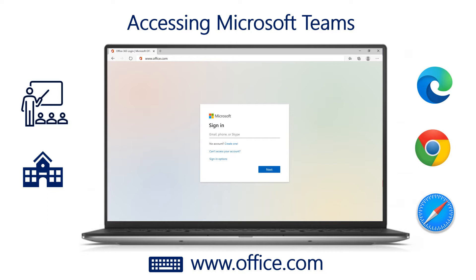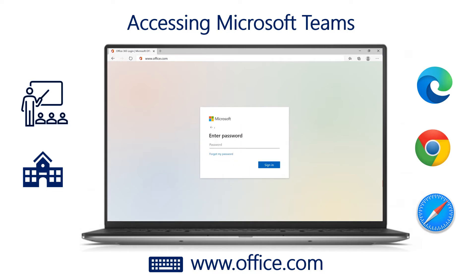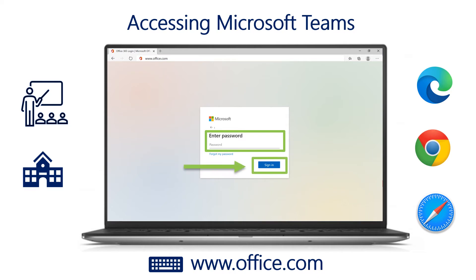If you have this information, enter your child's school issued account username in the first box. With that information entered, simply click on the next button below. Next up, you or your child should enter the password associated with the school or district issued Office 365 account. After entering the password, simply click on the sign in button to access Office 365.